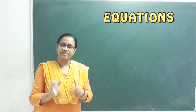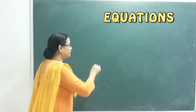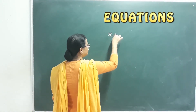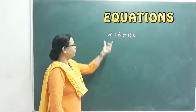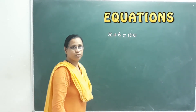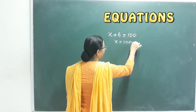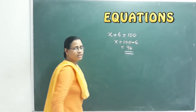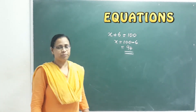If we use the maths test, we have 100 marks total. We use x for the mark. x plus 6 is equal to 100. So x is equal to 100 minus 6, that means 94 marks. Originally, Rajan got 94 marks. It's simple.